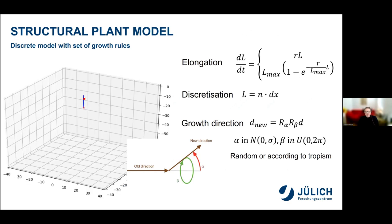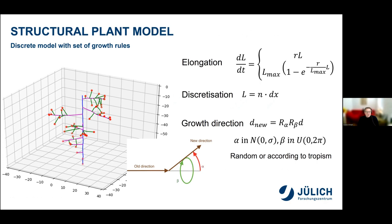Let me start with the structural part. We developed the structure of the plant as a discrete model, where the plant consists of nodes connected by edges, or segments. The structure is basically represented by a tree graph. Here it is visualized for the example of growing roots. Each red circle represents a growing root tip. The elongation of each branch follows either a linear or negative exponential growth pattern, or any other user-derived function. The spatial discretization can also be fixed by the user.